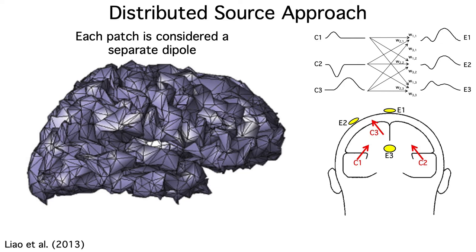We then assume that each patch is a tiny dipole. We know the locations of the patches from the structural MRI data, and we assume that the dipole for a given patch is oriented perpendicular to the cortical surface.